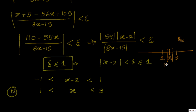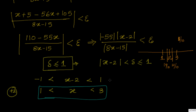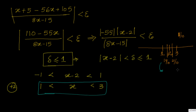If I take delta = 1/10, the interval becomes 19/10 and 21/10. This is not working out with delta ≤ 1 because I end up with an interval where x is not defined at 1.875. So I am trying to constrain the x-axis — the delta interval should be smaller. I am taking delta less than 1/10.